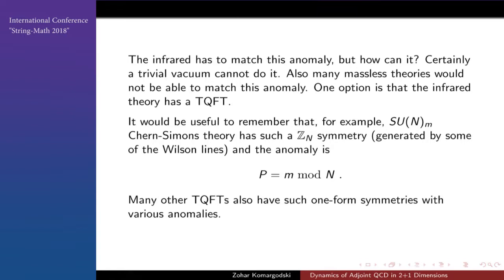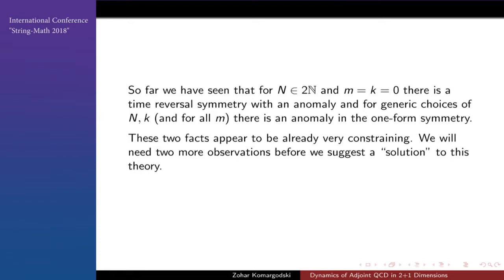The theory we're discussing has a time-reversal symmetry at k=0 which has an anomaly, and it also has a one-form (center) symmetry which also has an anomaly. An important example of a theory with such a one-form symmetry anomaly is a pure SU(N) level-M Chern-Simons theory, whose anomaly is just M mod N, where M is the level. There are many other TQFTs with similar one-form symmetries whose anomalies one can study.